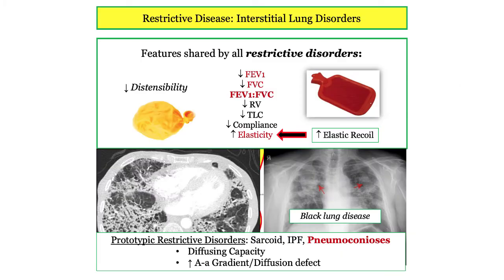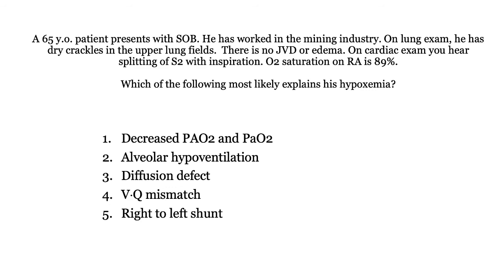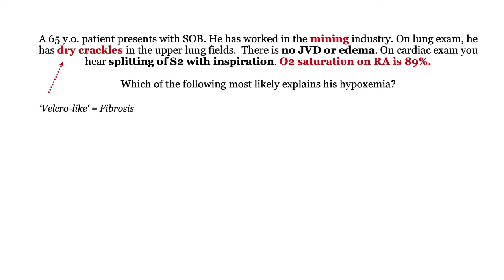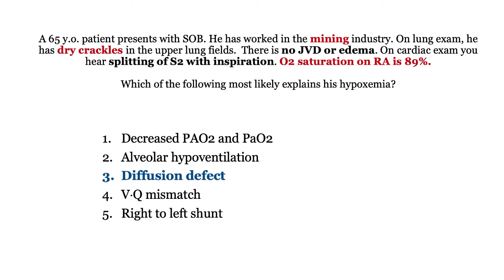I want to squeeze in one more question, included to underscore pneumoconiosis in the broad context of interstitial lung disorders and associated physiologic derangements. We have a patient working in the mining industry — silica or coal. Dry crackles are pathognomonic for interstitial fibrosis and the patient is hypoxemic. There is no JVD or edema, meaning no evidence of cor pulmonale, and the splitting of S2 is simply physiologic. The question asks the physiologic basis for hypoxemia in interstitial lung disease — this is an AA gradient question asking for the basis of a wide AA gradient.